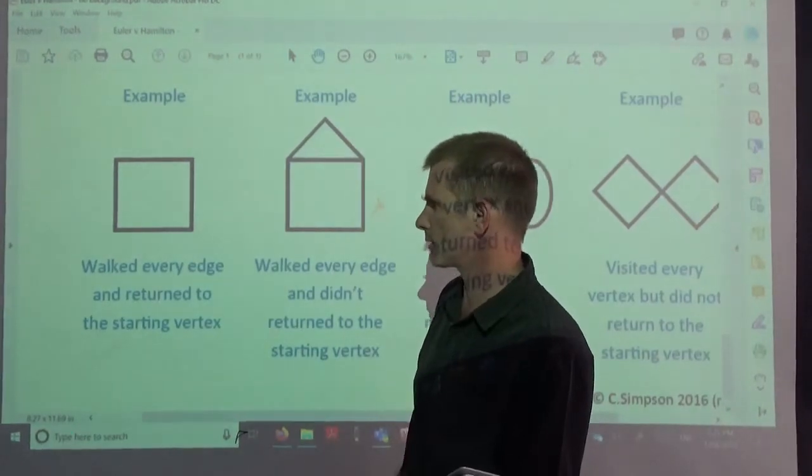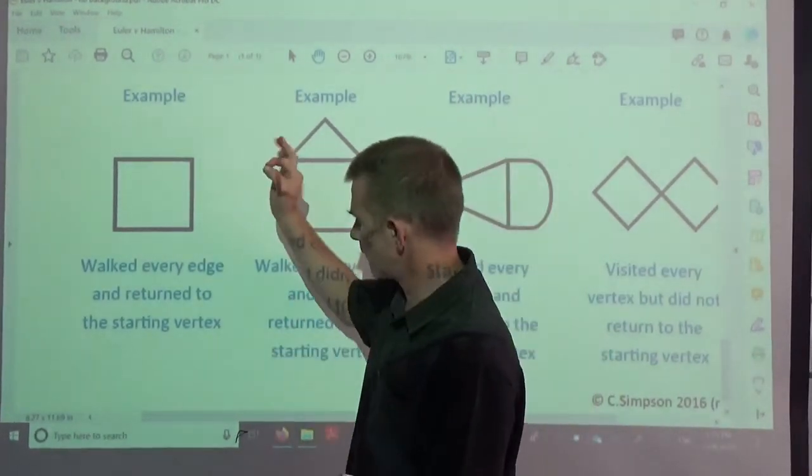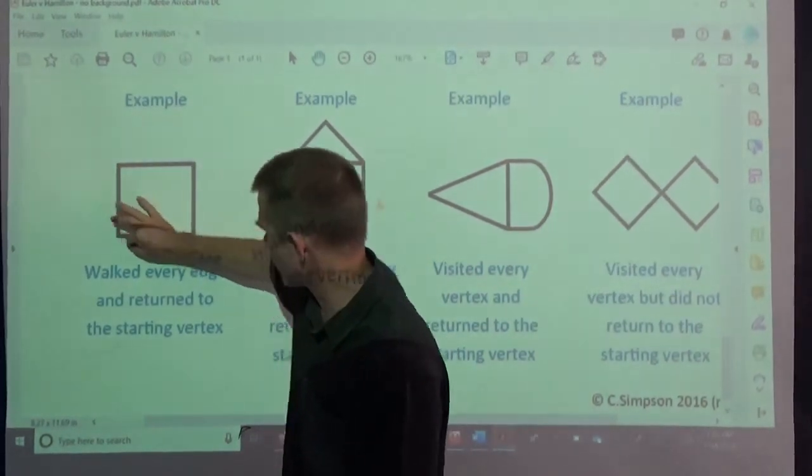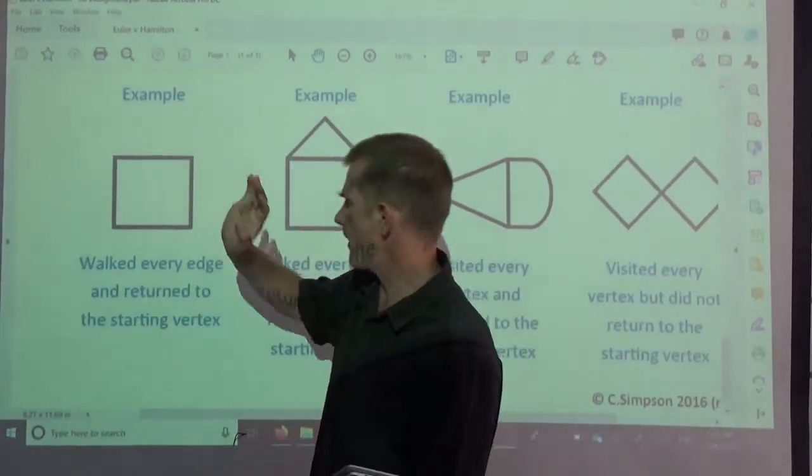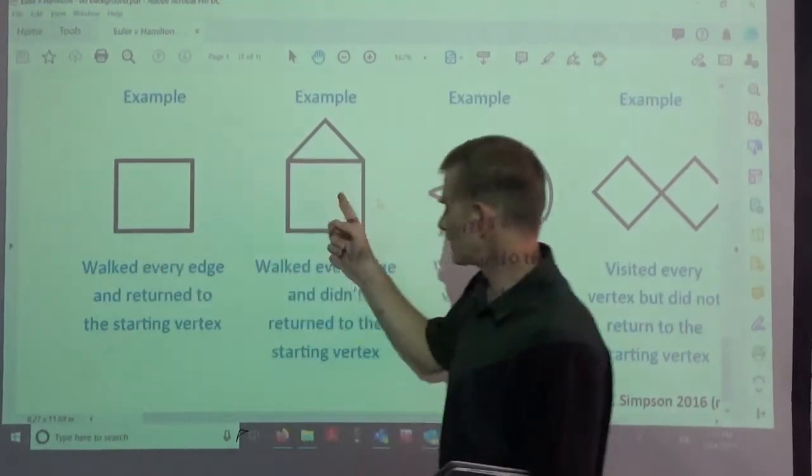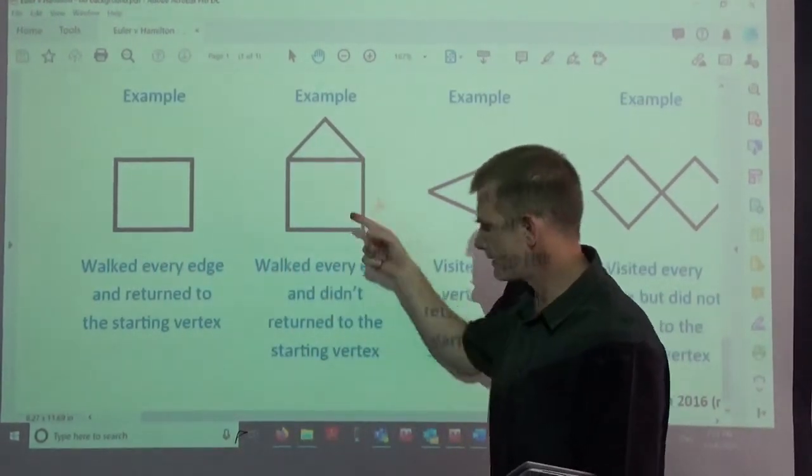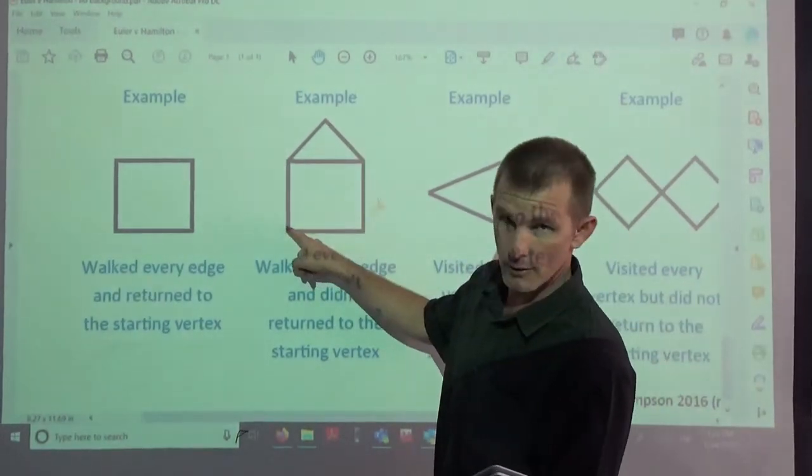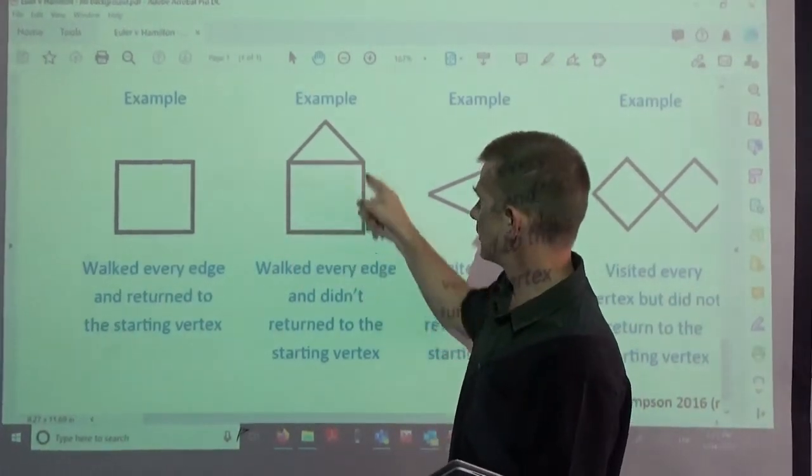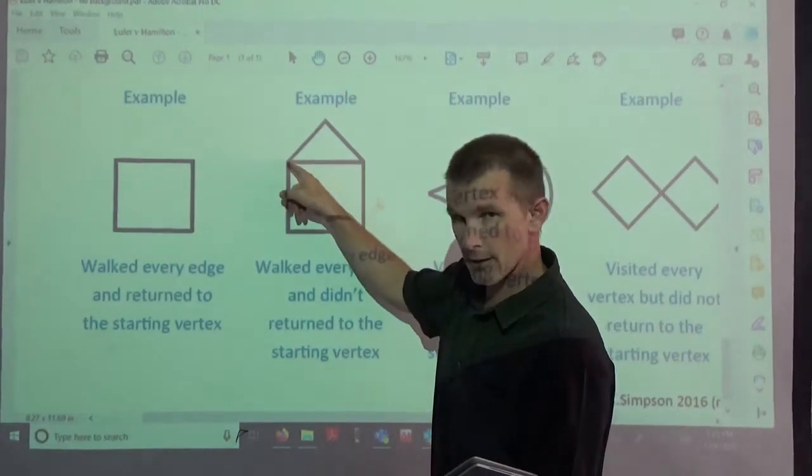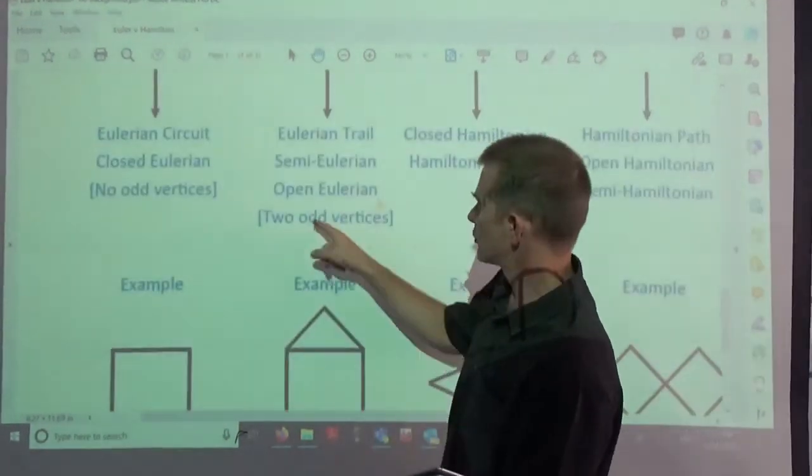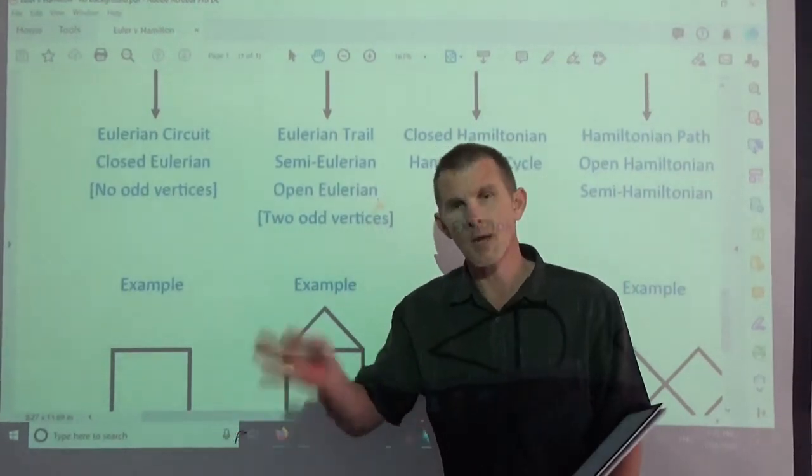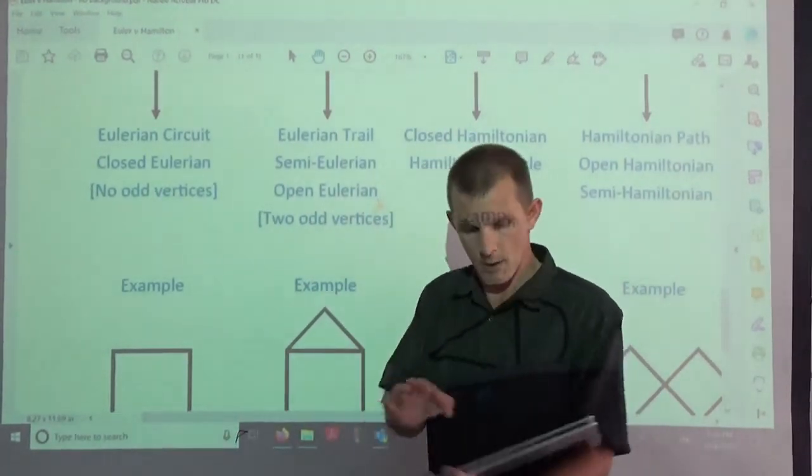I went through every edge and I finished up at the same vertex. I can walk every edge and finish at the starting vertex. I got my students to actually with a different color pen draw arrows along the lines of where they were going. This one walked every edge and did not return to the starting vertex. Let's look at degree of vertex: 2, 2, 3, 3.